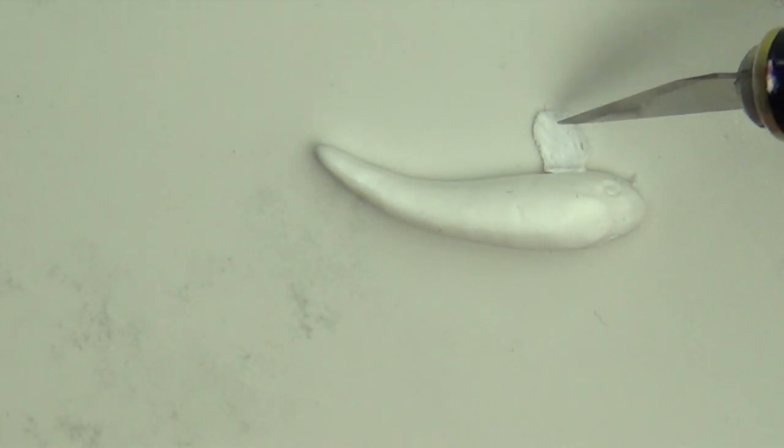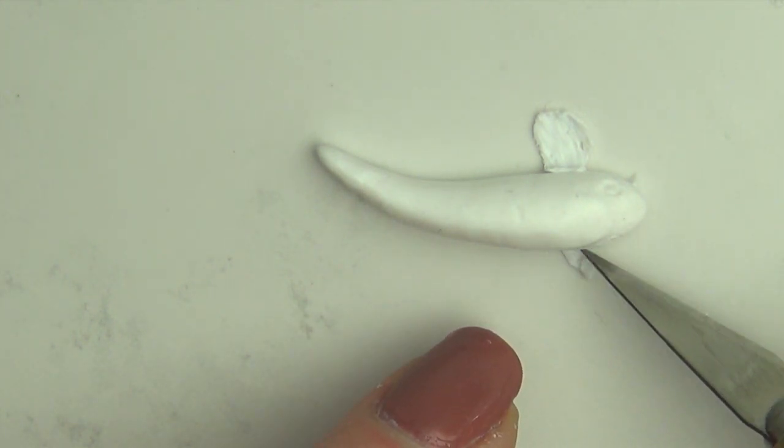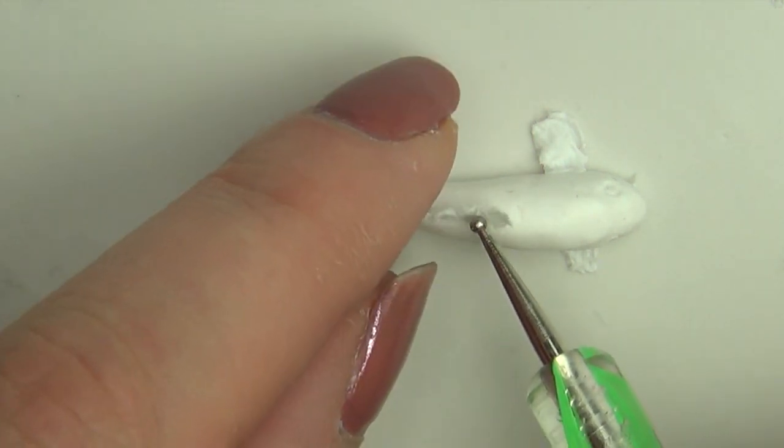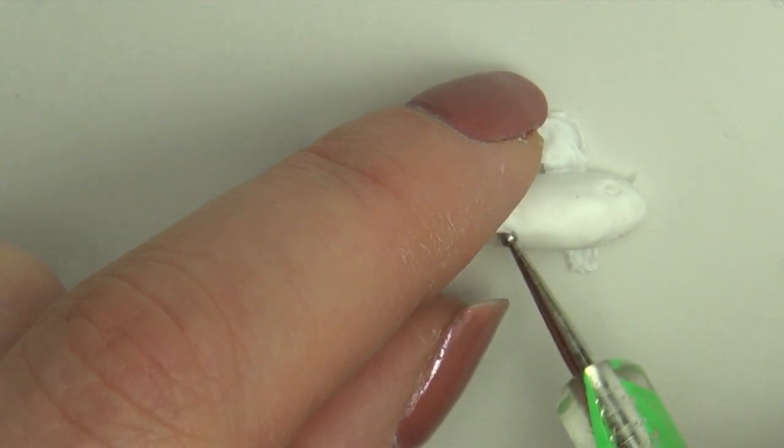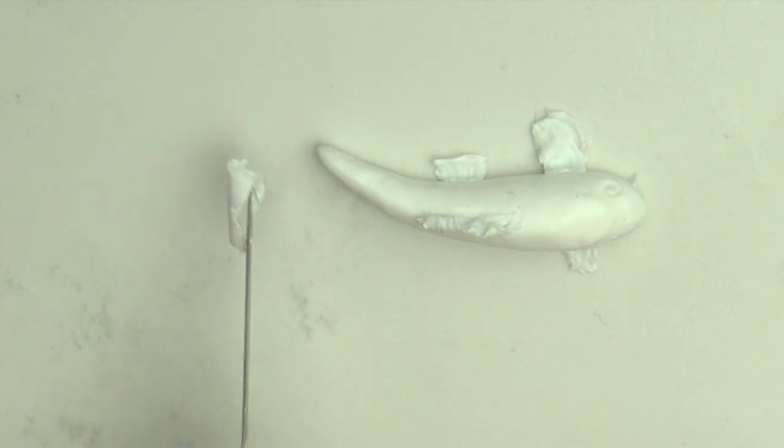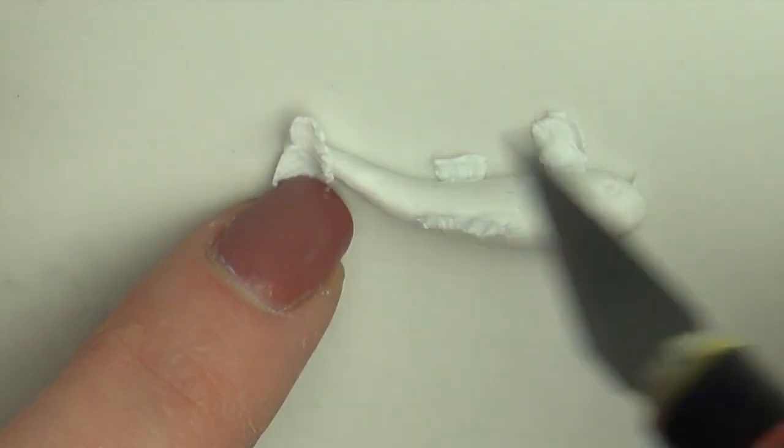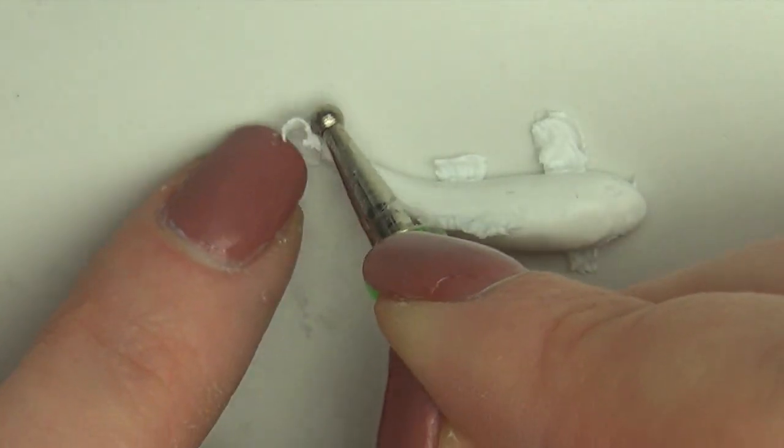When you've done all your fins, gently lift them up from your work surface and add them to the fish. When you've done all your fish, bake them completely according to package instructions.